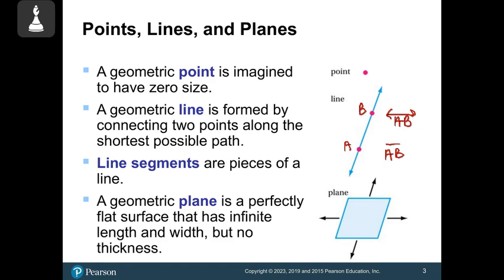We also have a geometric plane, which is going to be a perfectly flat surface with two dimensions — length and width. So a point has zero dimensions, a line has one dimension extending forever in one direction, and a plane has two dimensions extending forever in length and width.